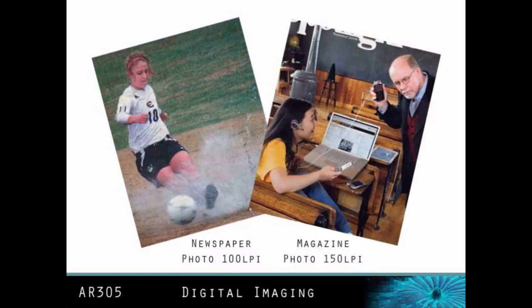Newspapers commonly print using 100 LPI, and magazines commonly use 150 LPI. An image printed using 150 LPI has more halftone dots per inch, therefore they are smaller and the final product appears smoother.